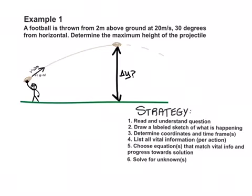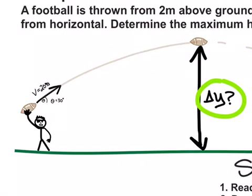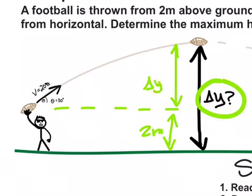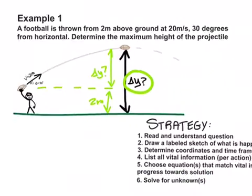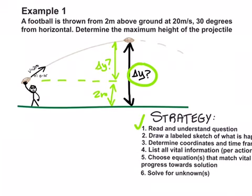Let's try an example problem. A football is thrown from 2 meters above ground at 20 meters per second and 30 degrees from horizontal. Determine the maximum height off the ground of the projectile. Let's carefully label that. They tell us we start with 2 meters already off the ground, and we know we're going to raise another amount of vertical displacement, but if we add the two of those together, we should get total displacement off the ground. So now we've read and understood the question, that's step 1. Draw a labeled sketch, it's kind of there.